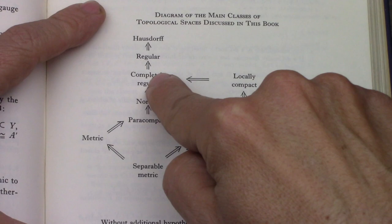So a separable metric space is regular Lindelof, is paracompact, is normal, completely regular, regular Hausdorff, and so on.